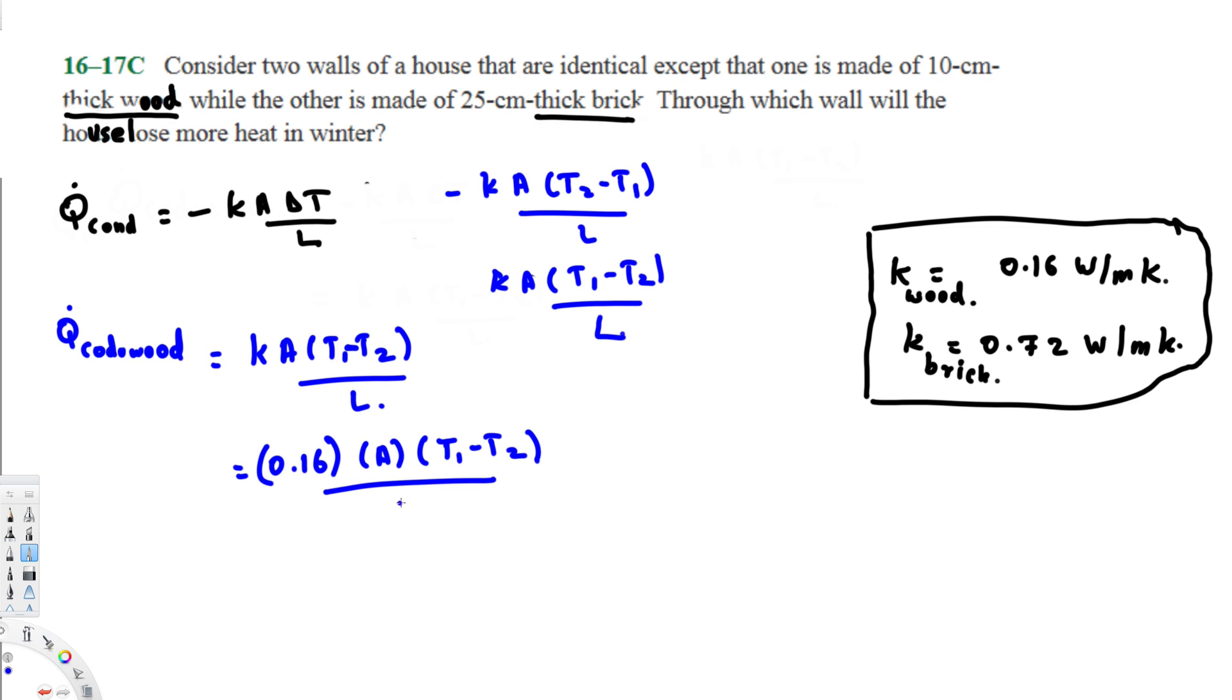If you divide this one by this one, this is going to equal 1.6 A (T1 minus T2). So this is going to be the conductivity equation for wood. Now let's create the equation for brick.